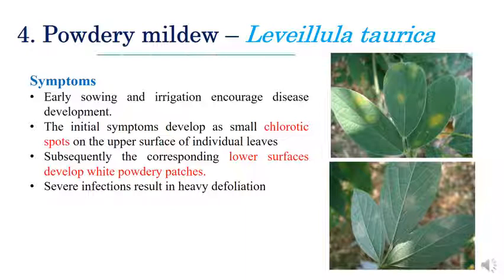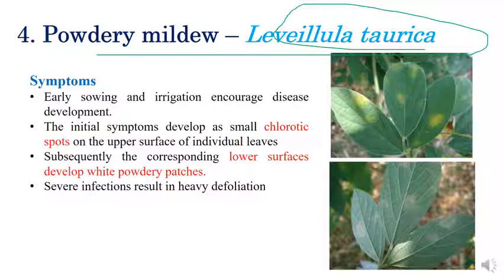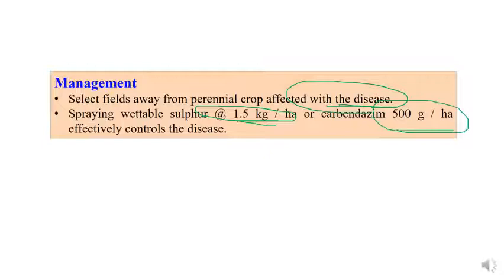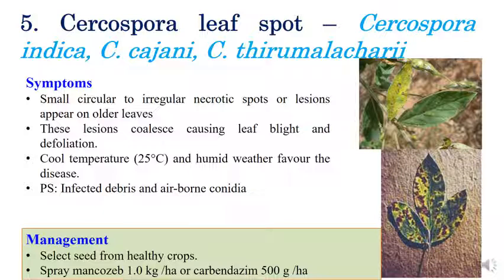Powdery mildew is caused by Leveillula taurica. White color powdery growth or powdery patches can be clearly seen on the lower surface of the leaf. In later stages, sclerotic spots can be seen on the upper surface, along with yellowing of leaves. Severe infection results in defoliation. For management: select fields away from perennial crops with no previous records of the disease; spray wettable sulfur at 1.5 kilograms per hectare or carbendazim at 500 grams per hectare for effective control.